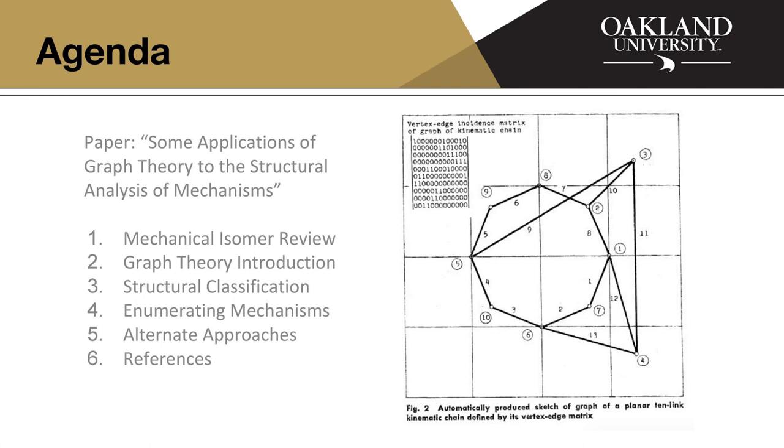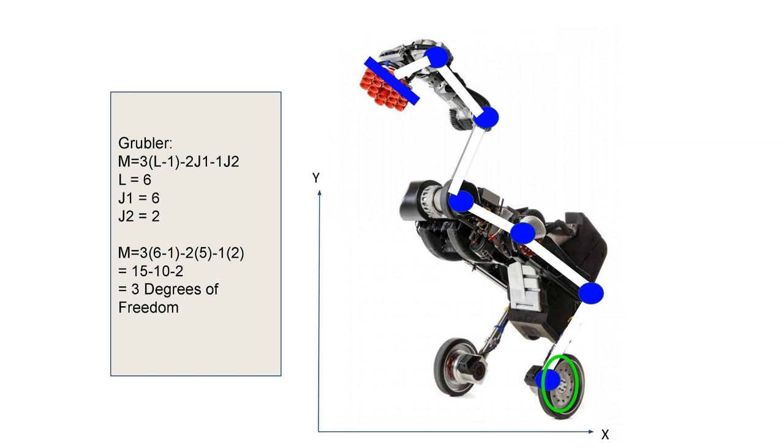There were four papers in total that I read through. To quickly introduce mechanical isomers, I just wanted to briefly point out a more modern, relevant version of a mechanism. So this is a Boston Dynamics robot. I think it's called the Handle. They made it for manufacturing purposes. And actually, it's got a lot of interesting mechanisms going on. Really quickly, though, using a Grubler equation.